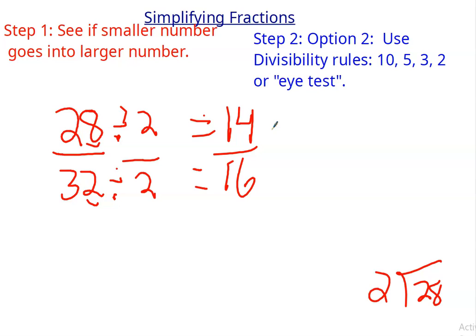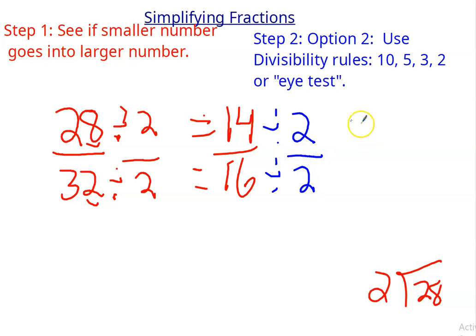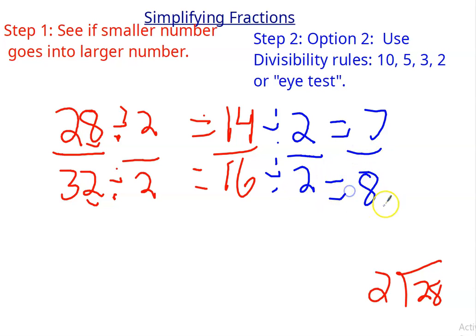How about 2? Yes, they're still even. So I can divide by 2 again. 14 divided by 2 equals 7. 16 divided by 2 equals 8. And now I have my final simplified answer, 7 eighths.